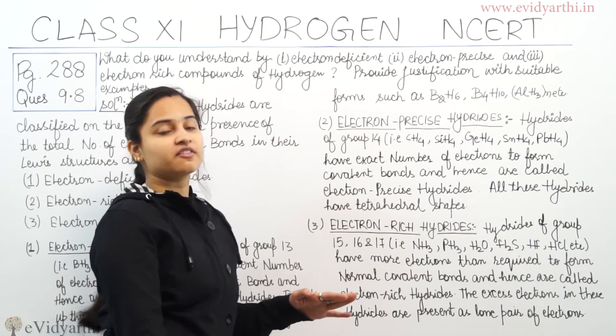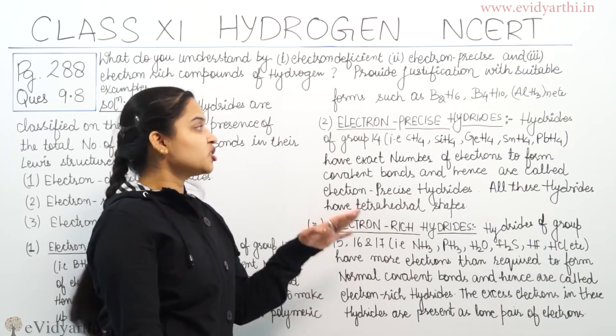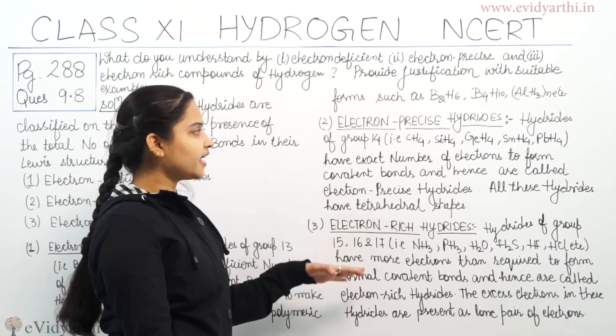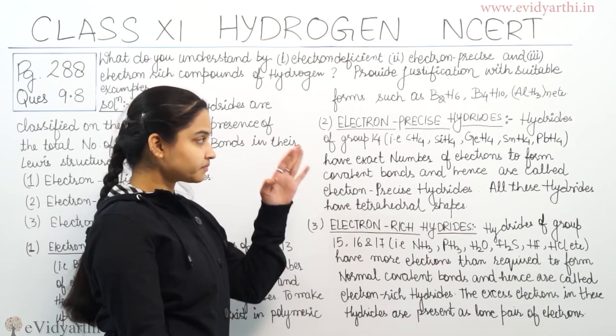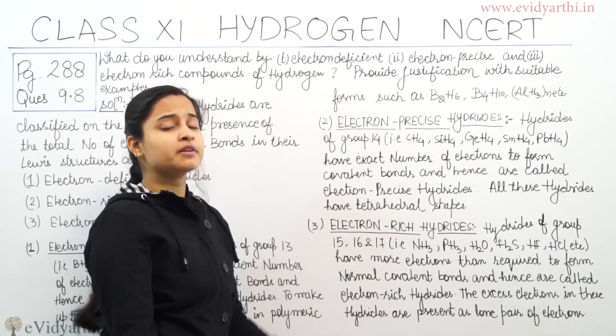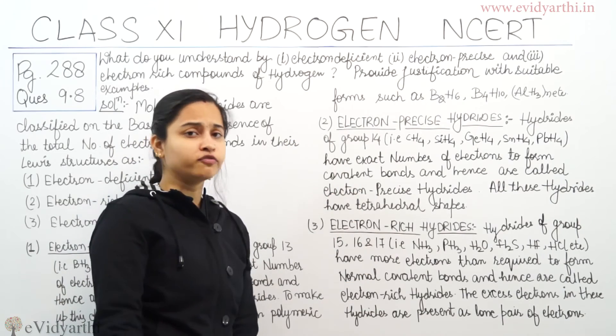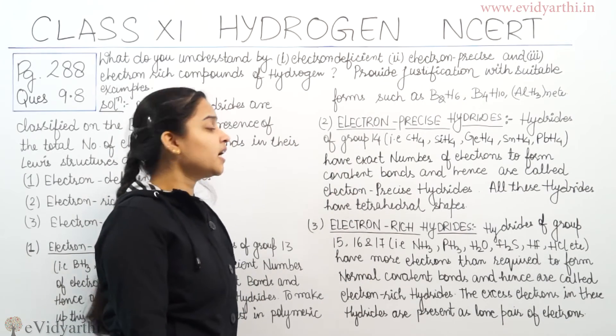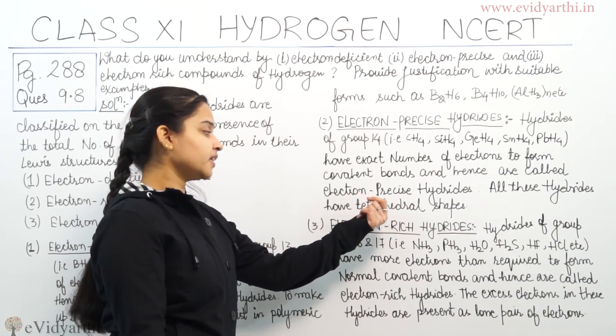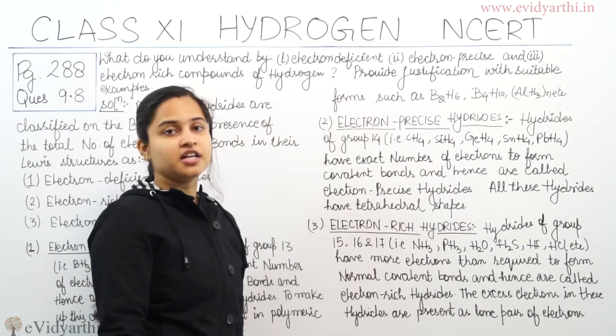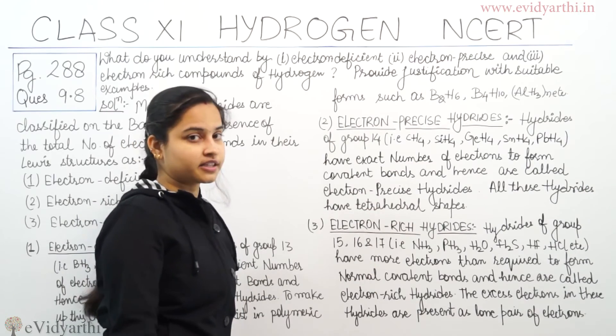All the hydrides of the carbon family, or Group 14 family, are having tetrahedral shapes. Do mark this point.